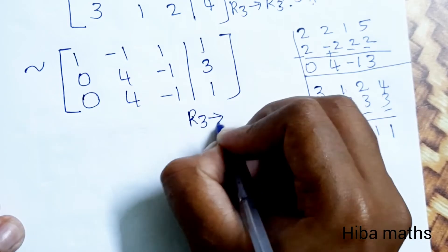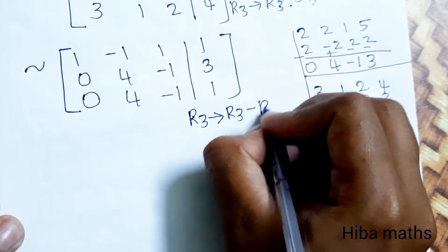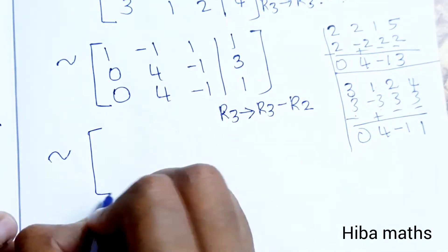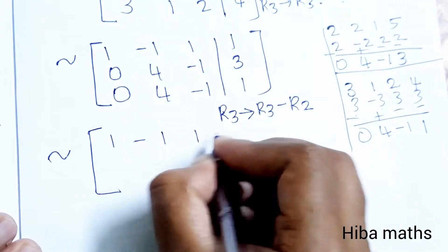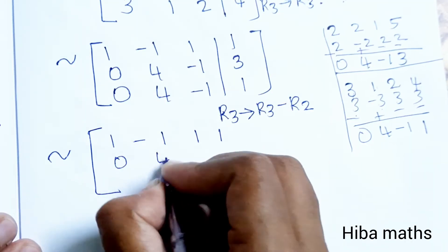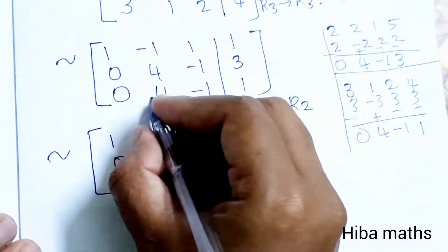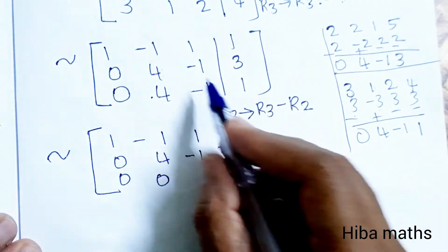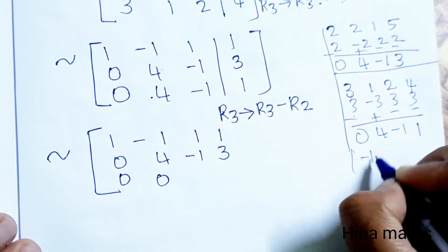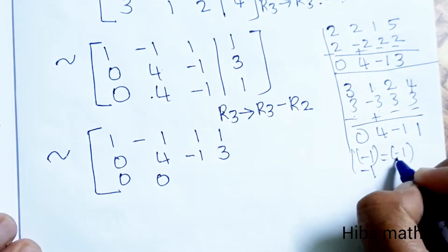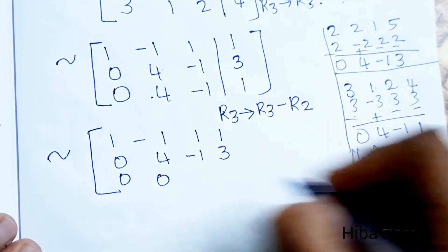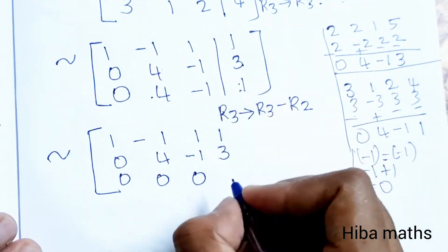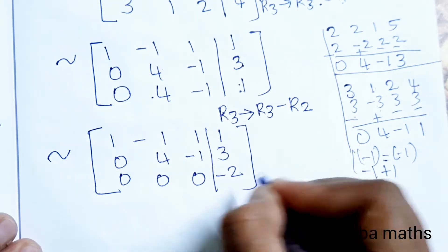It is easy to move forward. R3 turns to R3 minus R2. The matrix is now: row 1: 1, -1, 1, 1; row 2: 0, 4, -1, 3; row 3: 4 minus 4 = 0, -1 minus (-1) = 0, and 1 minus 3 = -2. So row 3 becomes 0, 0, 0, -2.